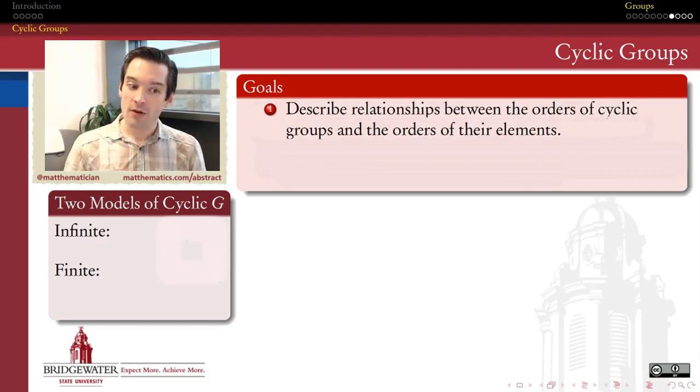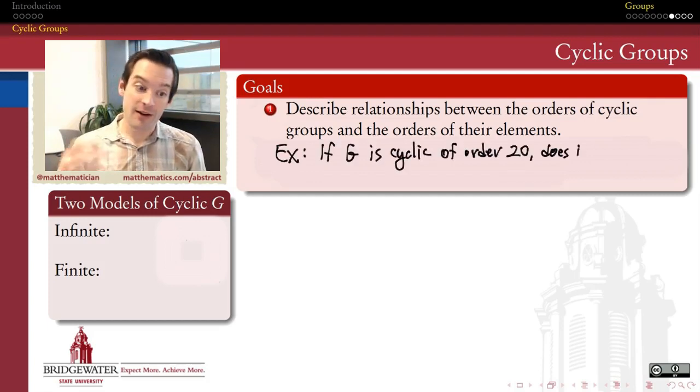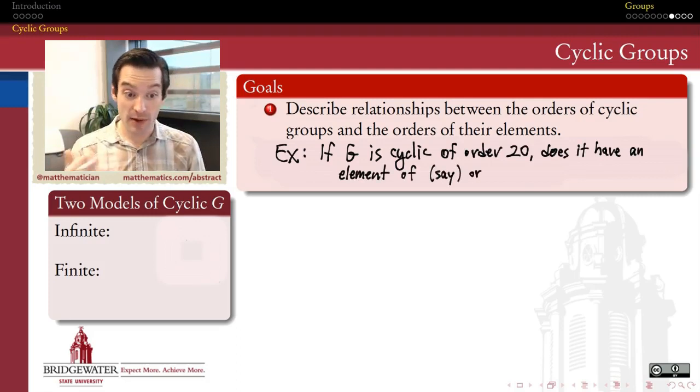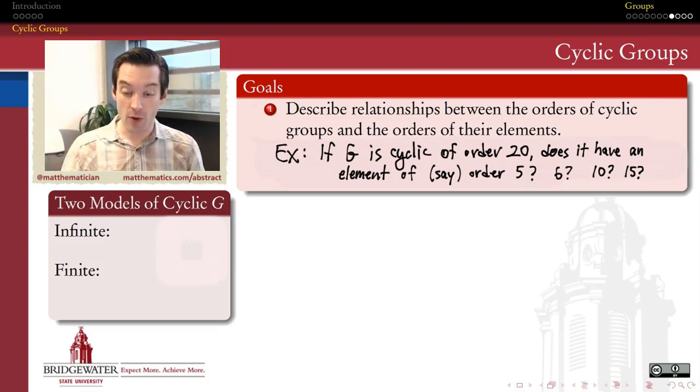And the goals are twofold. First of all, for a group that's cyclic, we want to understand what is the relationship between the order of a cyclic group and the order of the elements within that cyclic group. In the case where the order of the group is finite, we can ask a question like, all right, let's say G is a cyclic group of order 20. So it has 20 elements. Is one of those elements an element of order 5? Is one of them an element of order 6? Does it have an element of order 10? Does it have an element of order 15? So what are the relationships there between the order of the whole group itself and the order of the elements within that group? That's goal number one, and it turns out there's quite a bit to say there.